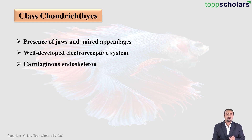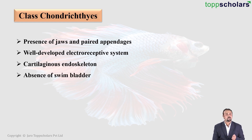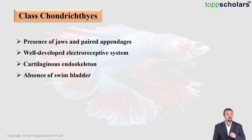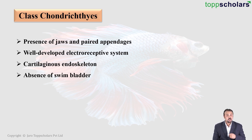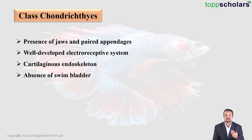They have a cartilaginous endoskeleton and they do not have a swim bladder, also called an air bladder. The swim bladder is a small organ present in the abdomen of fishes that can inflate and deflate to control the depth of the fish in the water. This is the reason Chondrichthyes like sharks will always keep moving — because if they stop, they will start sinking down, as they do not have a swim bladder.